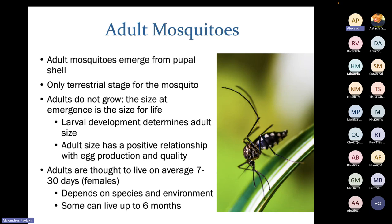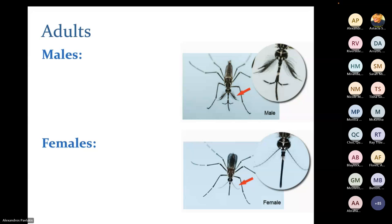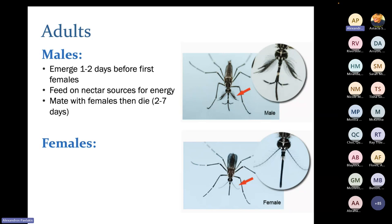Adults — females specifically — are thought to live for around a week to a month, depending on time of year and species. Some mosquitoes can overwinter in their adult stage and survive for up to six months. Males emerge around one to two days before the females. Males feed on nectar for energy, mate with females, and then die off, lasting at most a week. Importantly, males do not take blood meals — they do not bite.